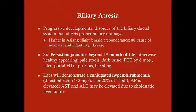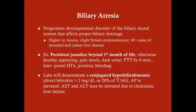By six months of age there's failure to thrive due to poor fat absorption without bile. Later, signs of liver failure from cholestasis include portal hypertension, esophageal varices, pruritus, and bleeding due to impaired clotting factor production. Labs demonstrate conjugated hyperbilirubinemia — conjugated hyperbilirubinemia is never normal in a baby. Direct bilirubin greater than 2 mg/dL or more than 20% of total bilirubin, plus possible elevation of alkaline phosphatase and transaminases.